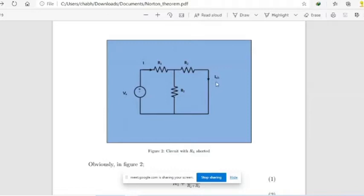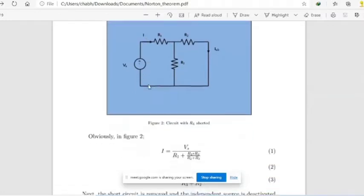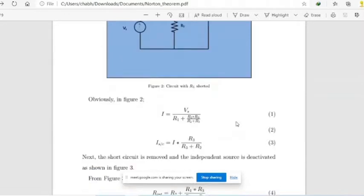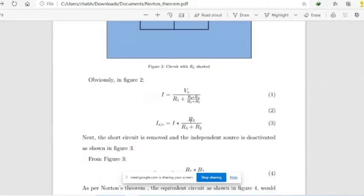To calculate the short circuit current, we must know the value of this I. The value of this I is voltage source divided by R1 plus R2 into R3 divided by R2 plus R3, which is shown here. Now value of this short circuit current is this I multiply by R3 divided by R3 plus R2.